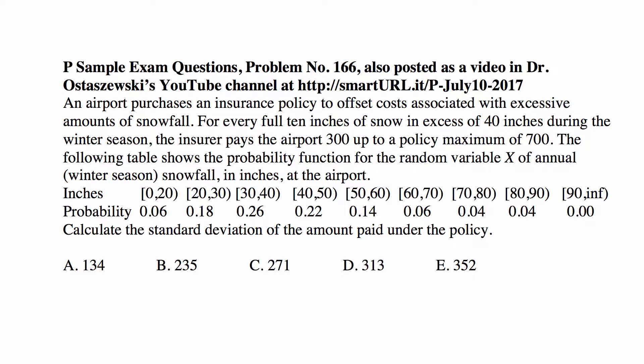0 to 20 inches, probability is 0.06. 20 to 30 inches, 0.18. 30 to 40 inches, 0.26. 40 to 50, 0.22. What's the total probability of those? 0.06 plus 0.18 is 0.24, plus 0.26 is 0.50, and plus 0.22 is 0.72. There will be no payment with probability 0.72.